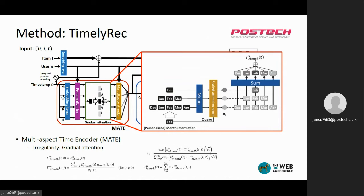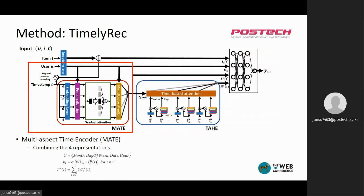It naturally includes more of the information of the closer and more similar slot, so that adjacent slots learn related information together and are trained to be similar. As the embeddings of adjacent time slots are trained to be similar, the recommender system can recommend the item even at similar times. Then MATE combines each of the representations for the four kinds of granularities into one final representation using multiplicative attention, implying all periodic information of the target time.